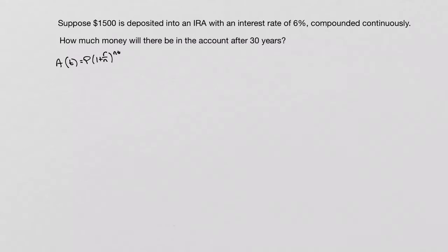Well, when you're compounded continuously, you're going to use the formula PERT. So we're going to do our A(t), our amount after a given time, is going to be our principal times e to the power of rt.